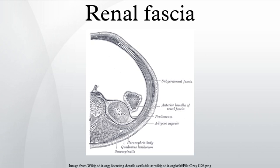Structure. Anterior attachment: the fascia passes anterior to the kidney, renal vessels, abdominal aorta, and inferior vena cava, and fuses with the anterior layer of the renal fascia of the opposite kidney.